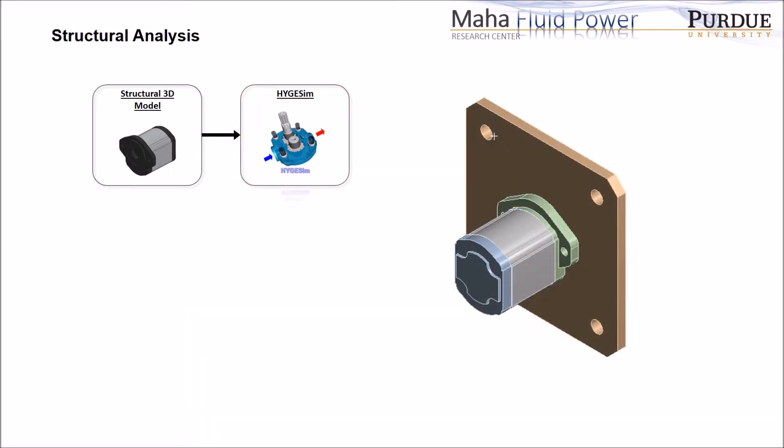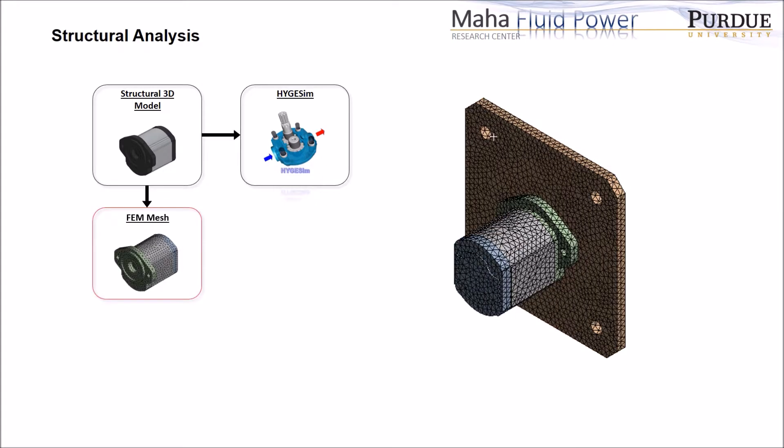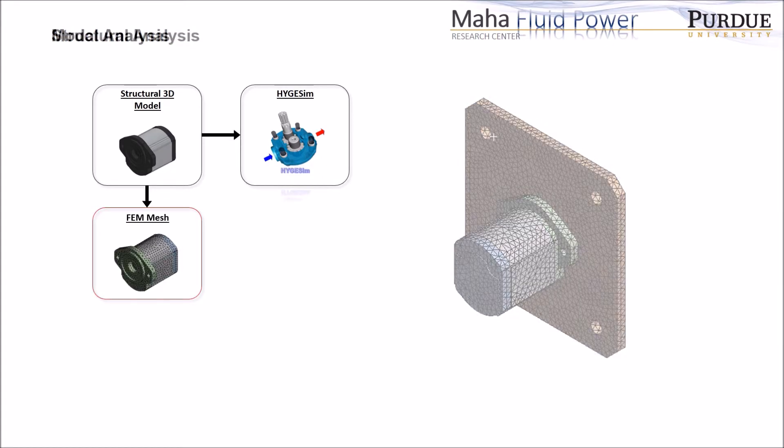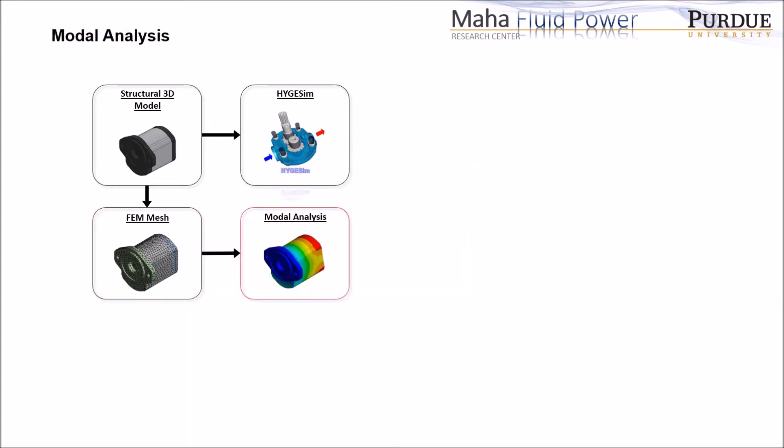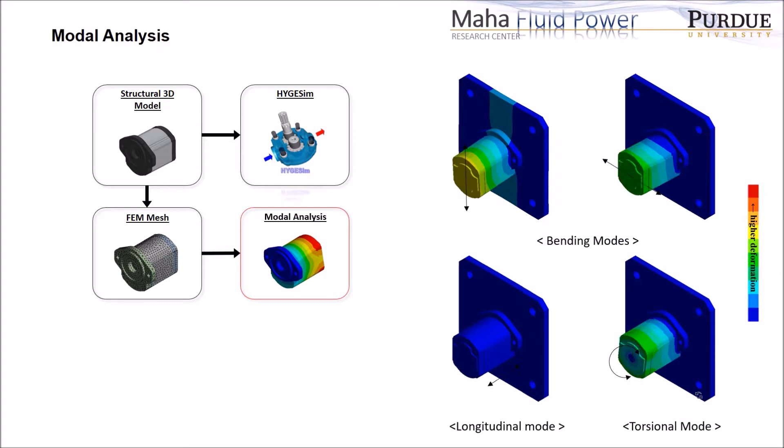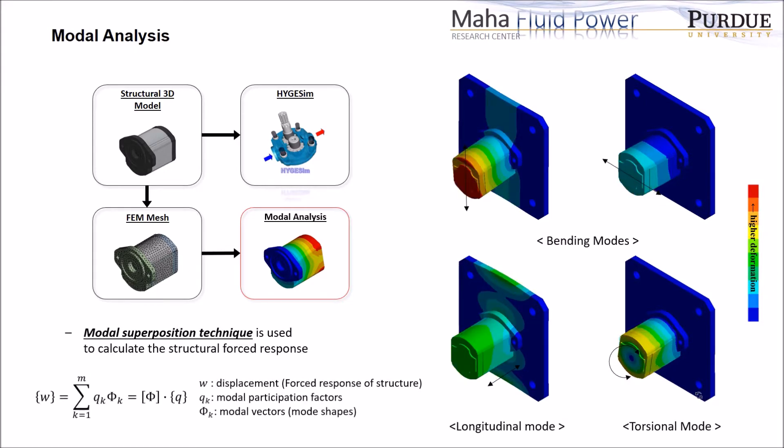For the structural analysis, first FEM mesh is generated, and then the modal analysis is performed to obtain the characteristics of the structural vibration. This modal information is used to implement the modal superposition technique for the efficient calculation of the forced response of the structure.